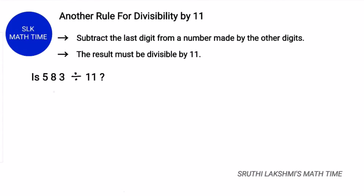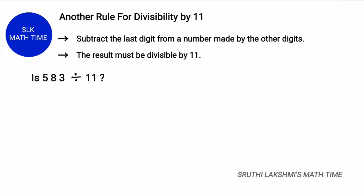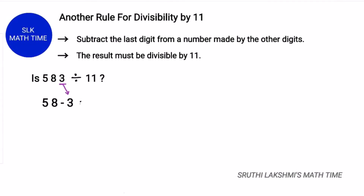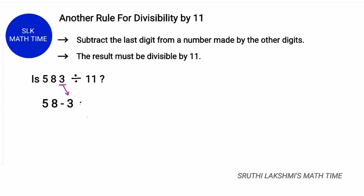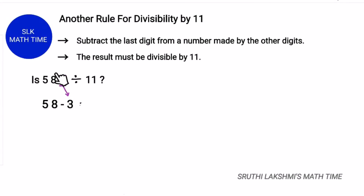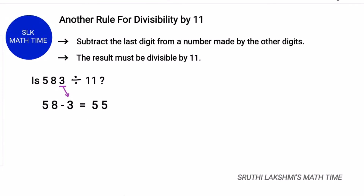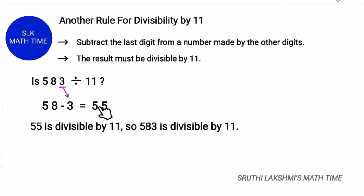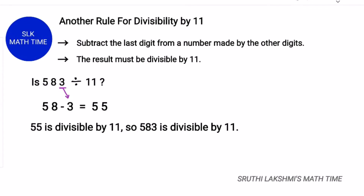So, let's see: is 583 divisible by 11? We do 58 minus 3, because the last digit here is 3. So we subtract the last digit from the rest of the digits, which is 58. So, 58 minus 3 is 55. Now, let's see if 55 is divisible by 11. 55 is divisible by 11, so 583 is also divisible by 11.